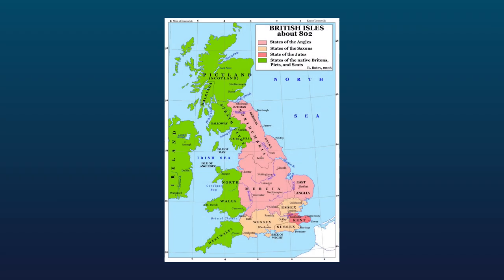The Anglo-Saxon period in England is often referred to as the Heptarchy, a Greek word meaning ruled by seven, because there were seven Anglo-Saxon kingdoms in ancient England. These seven kingdoms were eventually merged into four larger kingdoms: Mercia, Northumbria, Wessex, and East Anglia.